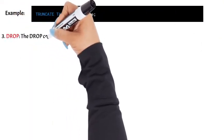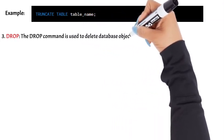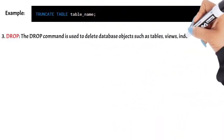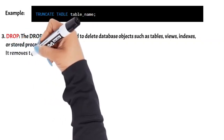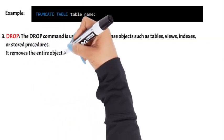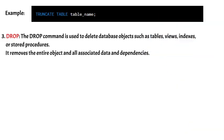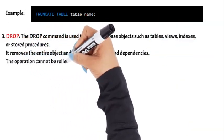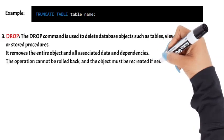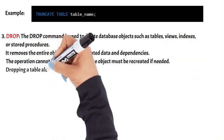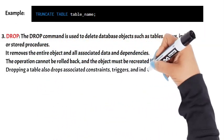3. Drop. The Drop command is used to delete database objects such as tables, views, indexes, or stored procedures. It removes the entire object and all associated data and dependencies. The operation cannot be rolled back, and the object must be recreated if needed. Dropping a table also drops associated constraints, triggers, and indexes.